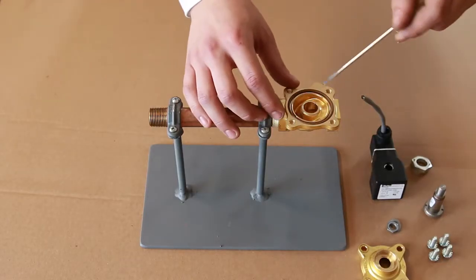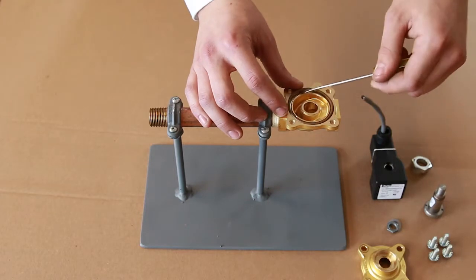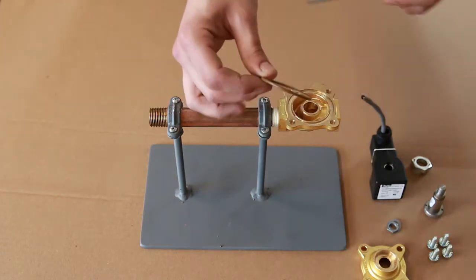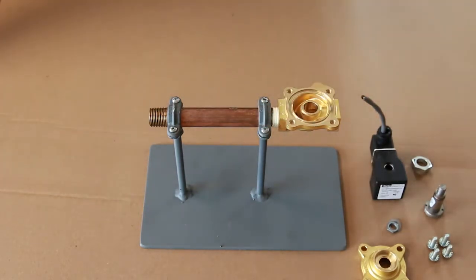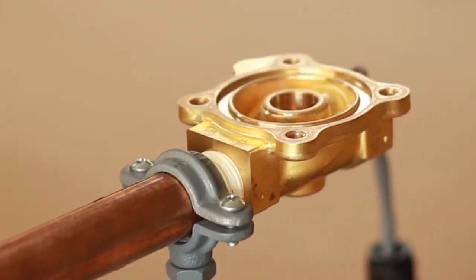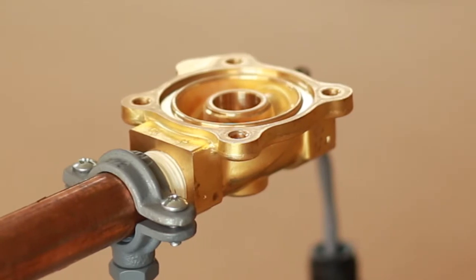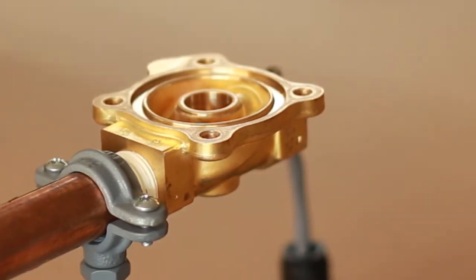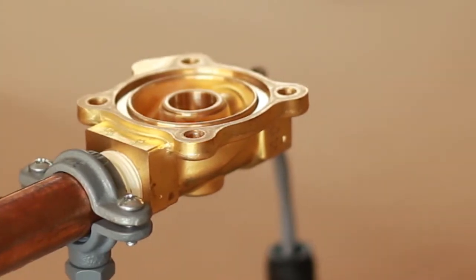Again, take your small flat head screwdriver to remove and discard the old body o-ring. While the valve is apart, you should inspect the center hole or seat for debris and wear. If this area has any buildup or appears rough and damaged, the whole valve may need to be replaced.